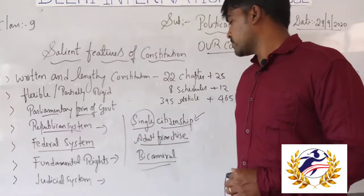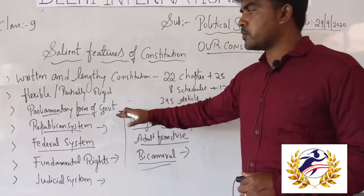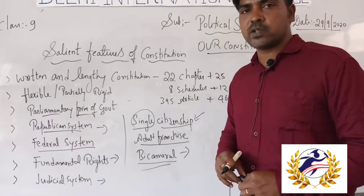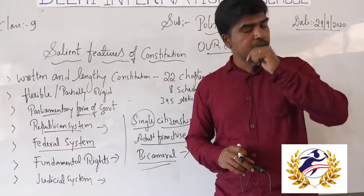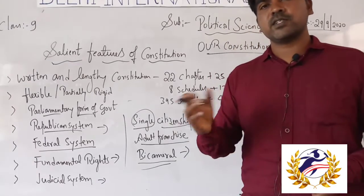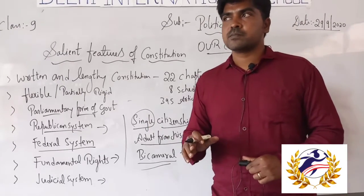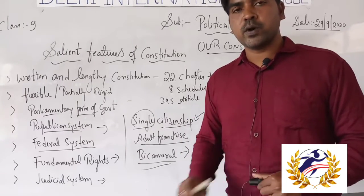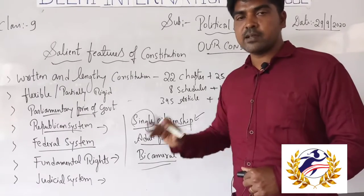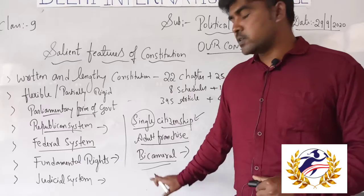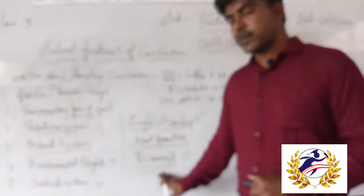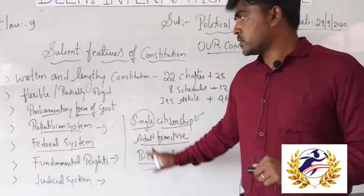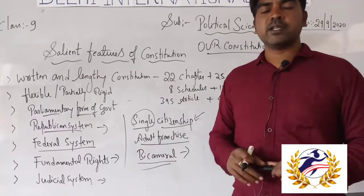Bicameral system was mentioned earlier in the parliamentary forum. Bicameral means two houses; unicameral means only one house. We have Rajya Sabha and Lok Sabha at the central level. In some states we also have a bicameral system — for example, Karnataka has Vidhan Sabha and Vidhan Parishad. Whether a state has a bicameral system depends on its population.